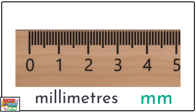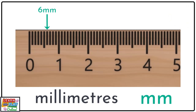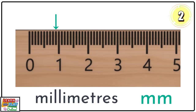When using a ruler to measure, we always start at the number zero. Moving on to the next increment or line shows the one millimeter mark. The next line shows the two millimeter mark. The next is three millimeters, and so on. Look at the mark where the arrow is pointing — how many millimeters is this? Six millimeters. Now let's try this one. How many millimeters is it at this point? Nine millimeters.